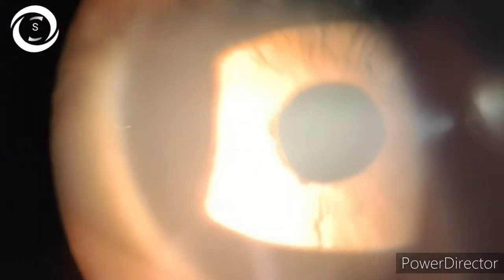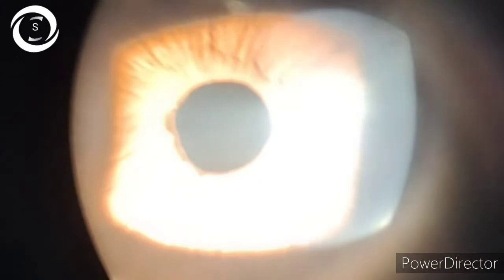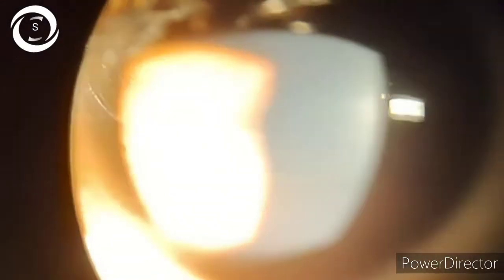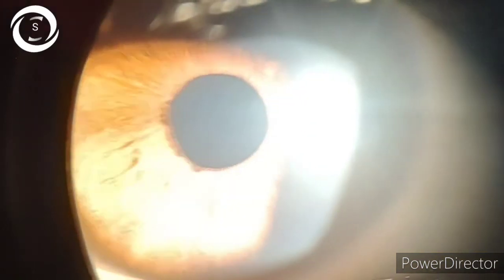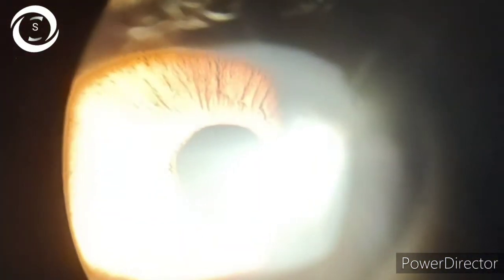Today we have a patient who came with complaints of pain and decreased vision in the left eye for many months. On examination, the right eye was normal with 6/6 vision, clear cornea, clear media. On the iris you can appreciate little ectropion uvea, but otherwise the fundus was normal.